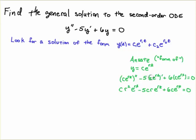Then I plug the ansatz into the first derivative term here and the r drops down because of the chain rule, and I get -5cre^(rt). Then I have a +6, and remember that is just y, so I just plug in ce^(rt).